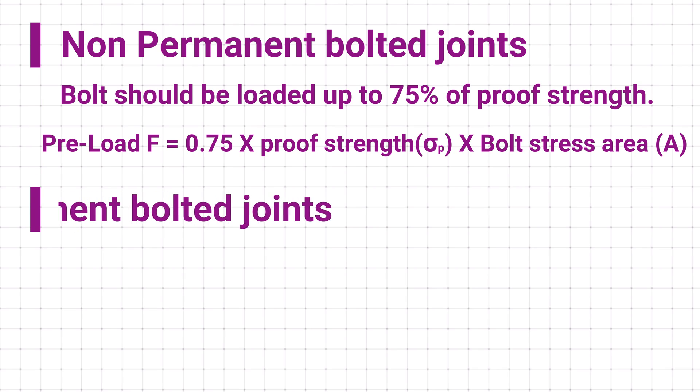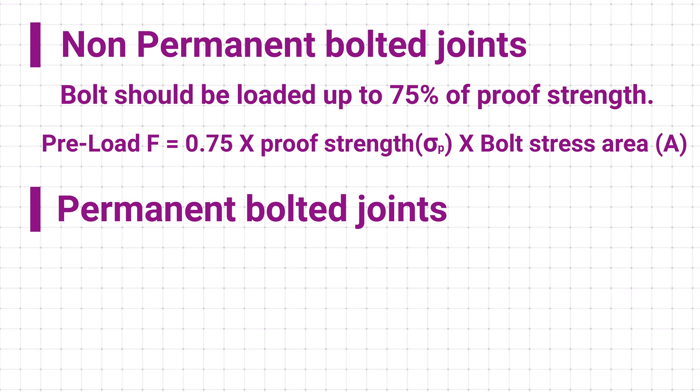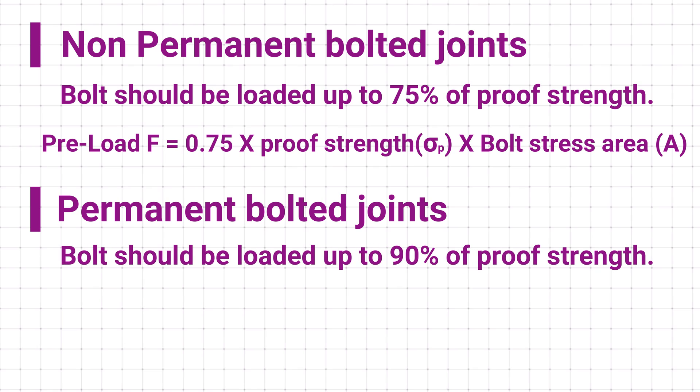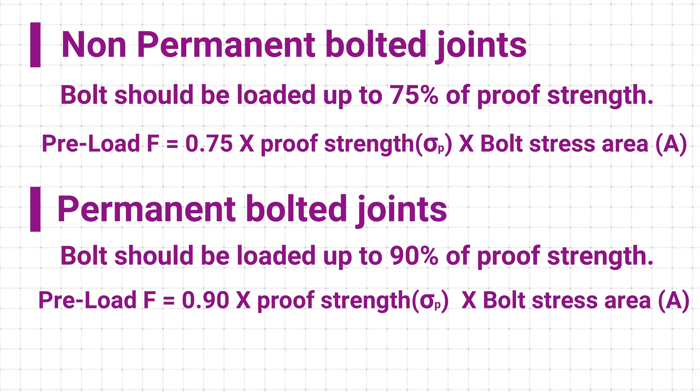And if the bolted joint is permanent, then we can load the bolt up to 90% of the proof strength. Therefore in case of permanent bolted joint, preload can be calculated as 0.90 times proof strength multiplied by the bolt stress area.